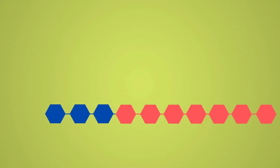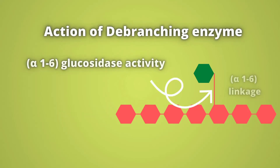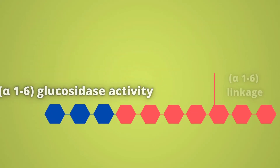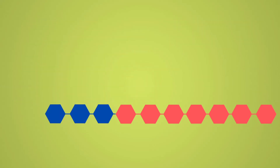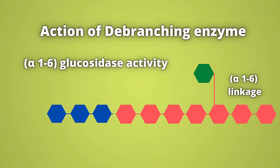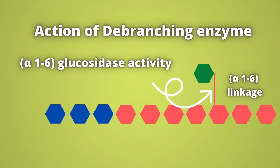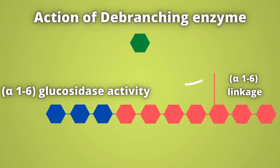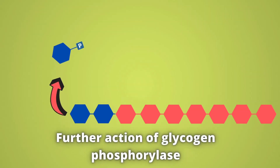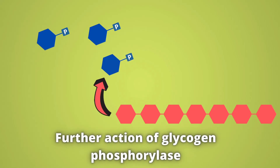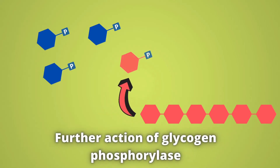The single glucose residue remaining at the branch point in the alpha 1,6 linkage is then released as free glucose by the alpha-1,6-glucosidase activity — the second activity of the debranching enzyme. It acts on the alpha 1,6 linkage of the branch point, releasing the single glucose residue as a free glucose molecule.